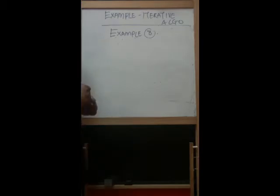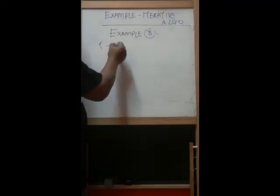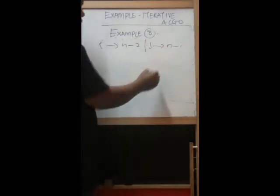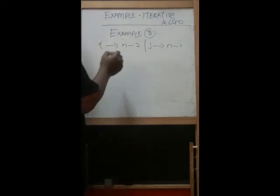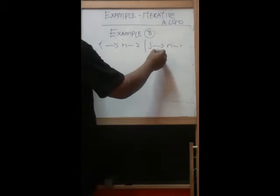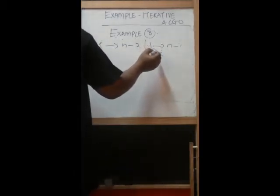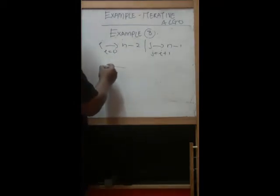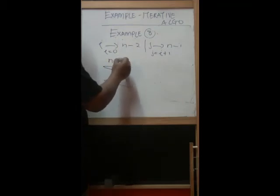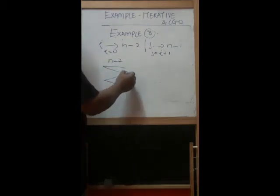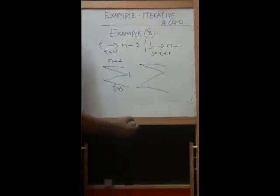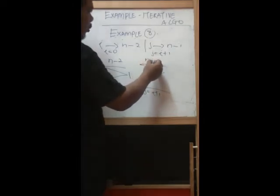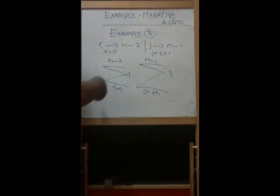Based on the loops, we do the analysis. The first loop i goes up to n minus 2, and j goes up to n minus 1, starting with j equal to i plus 1 where i starts at 0. We convert this into a summation formula: the outer summation from i equal to 0 to n minus 2, and an inner summation from j equal to i plus 1 to n minus 1. This is the first step — we establish this and then simplify.